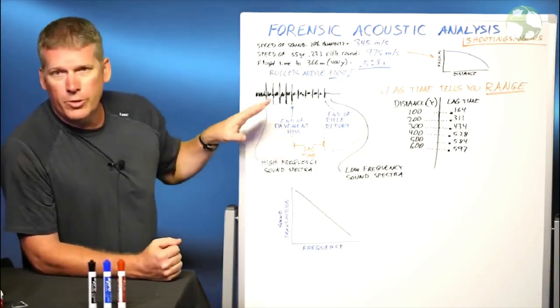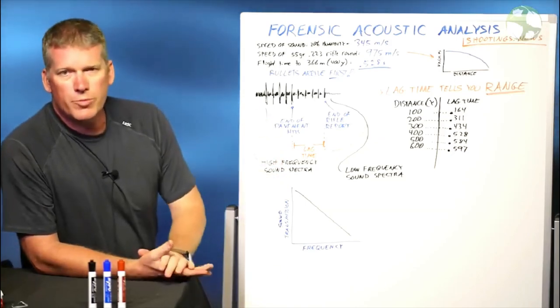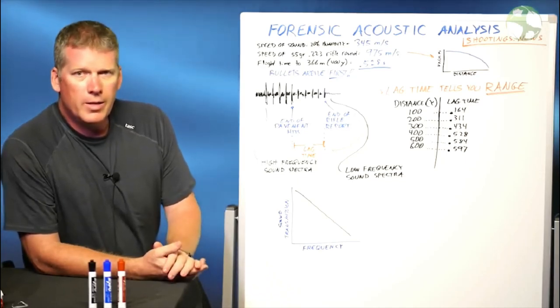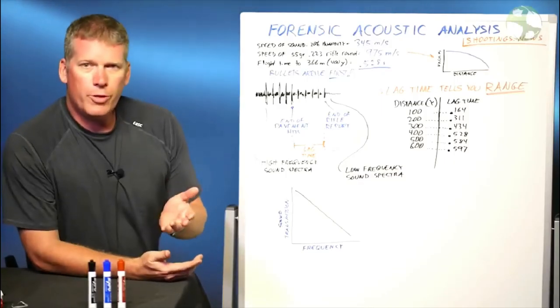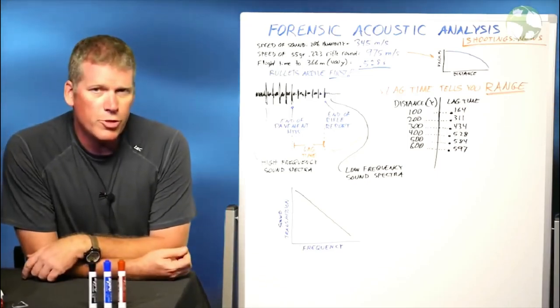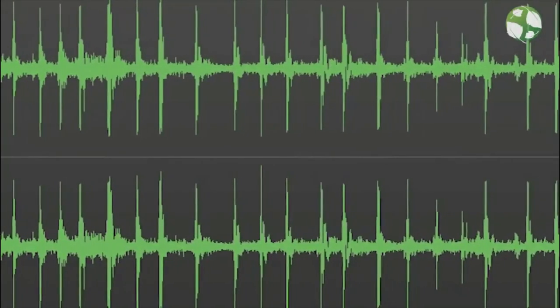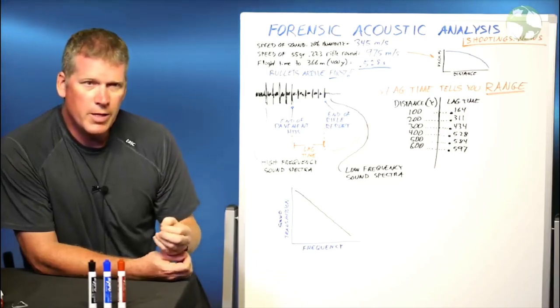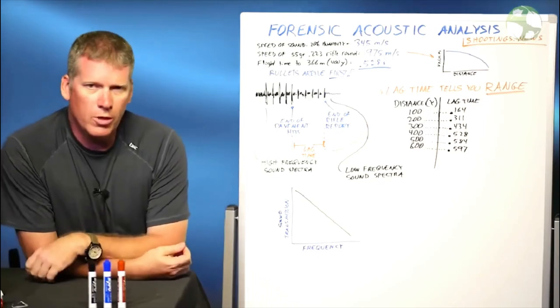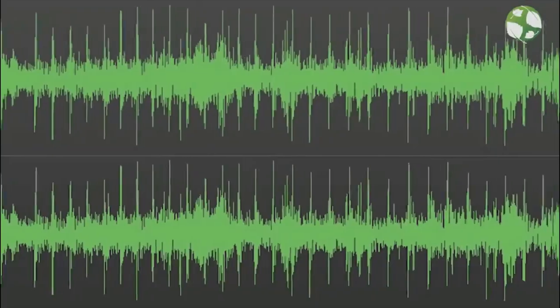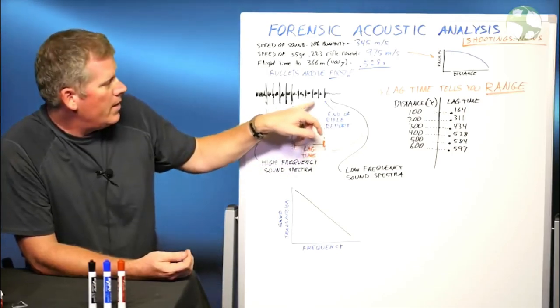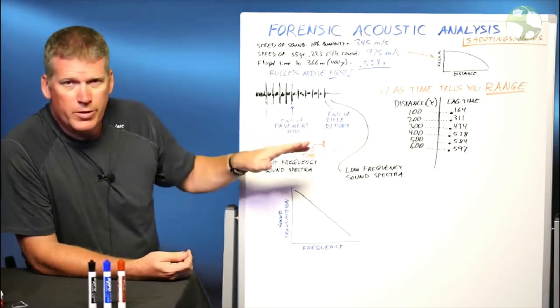I want you to listen to some sounds here. Here's a combination of gunfire hitting the pavement from the Las Vegas shooting. Here's the gunfire hitting the pavement followed by the rifle reports from the distance. I'm going to play for you just the sound of rifle rounds hitting the pavement. I want you to notice the high frequency sounds in that sound. Now, I want you to hear what it sounds like - the distant rifle reports arriving to your ear from a long ways away. Notice that it's a more low frequency sound.